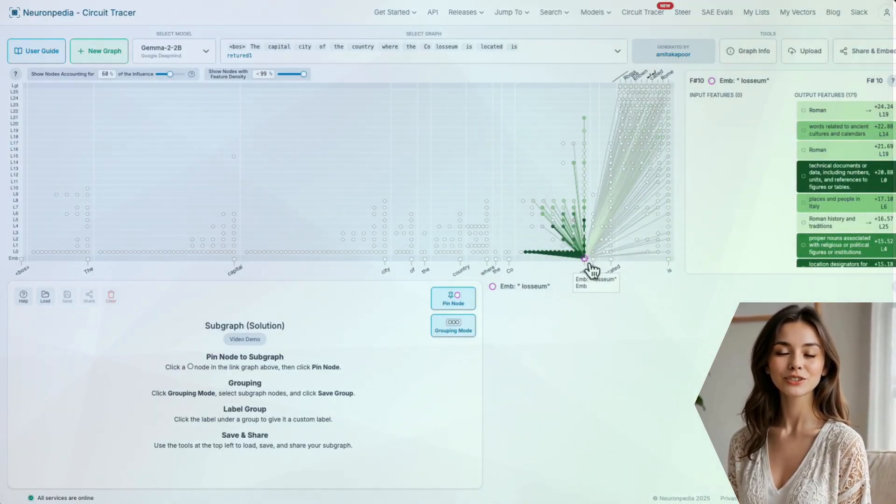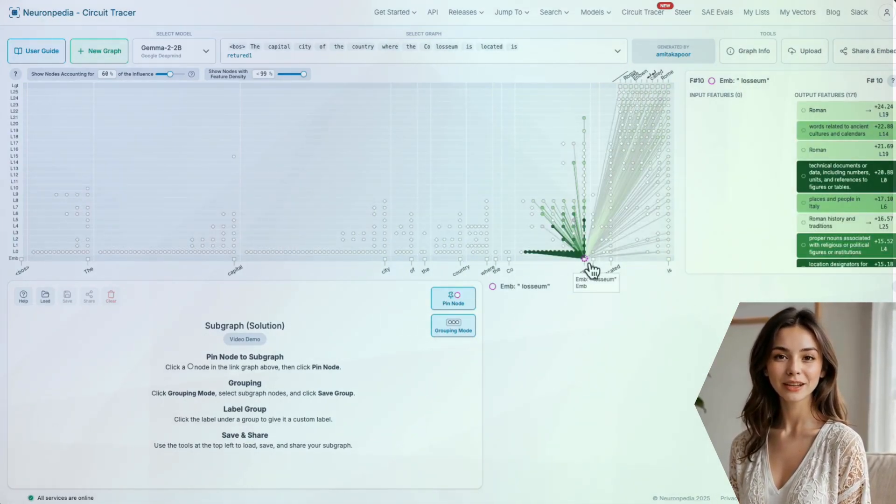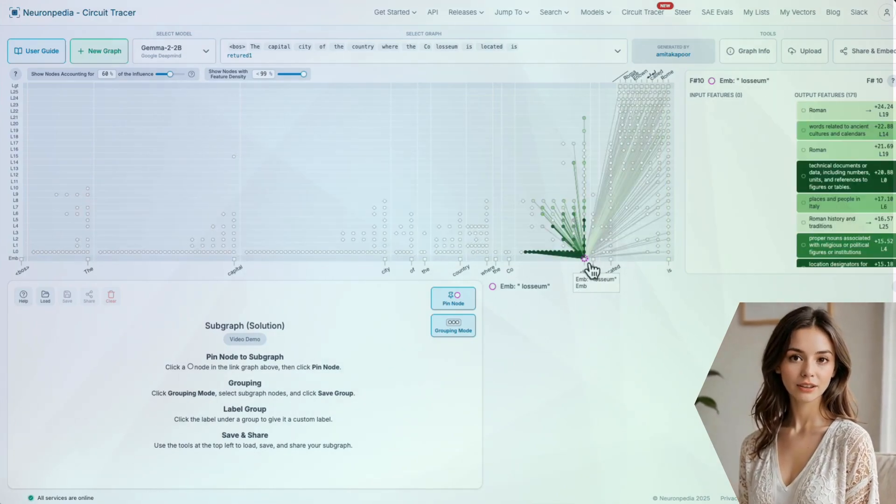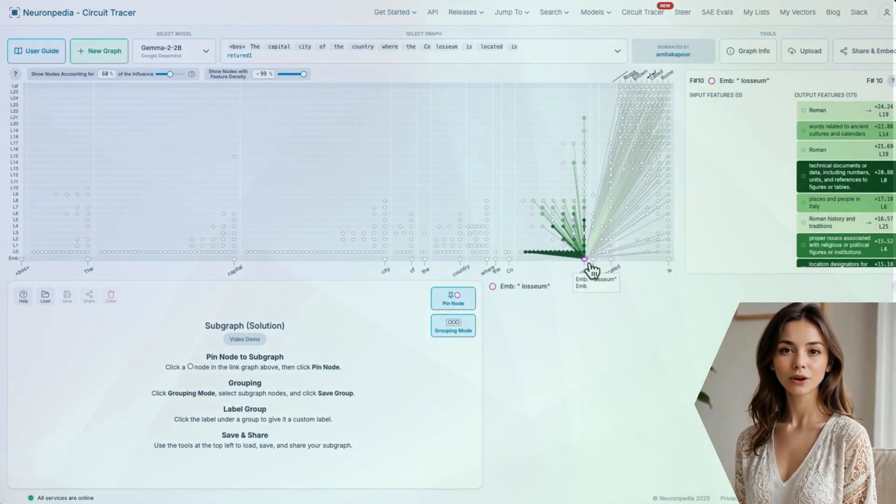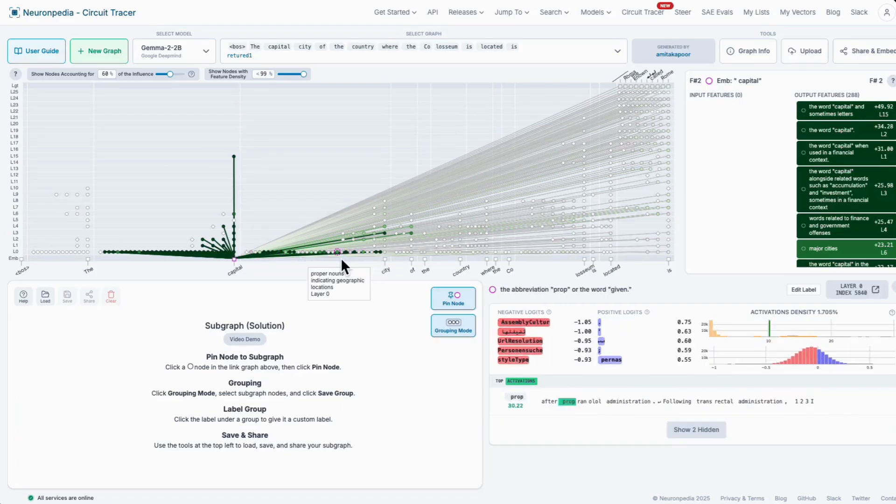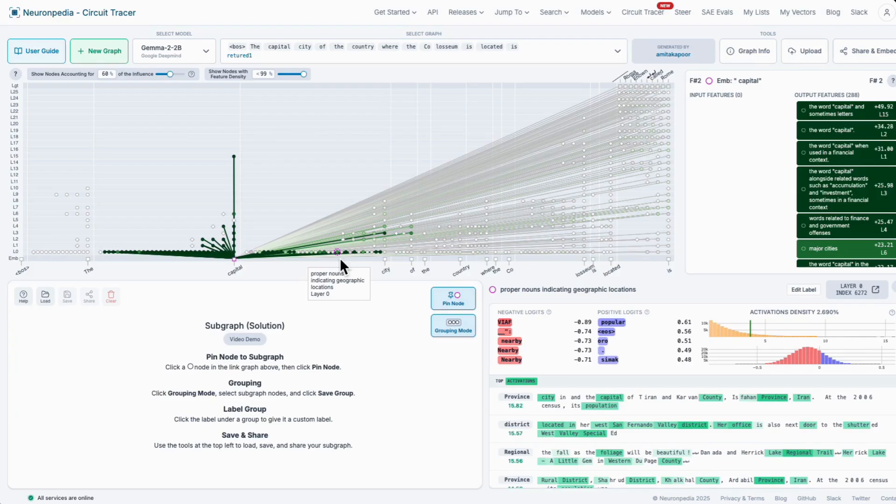First, the Circuit Tracer shows that the word Colosseum strongly activates features related to Roman history and inscriptions. You can see these connections lighting up here. The model is thinking, okay, Colosseum, that's a Roman thing. At the same time, the word capital in the prompt activates a whole different set of features, a general concept of capital cities. So now the model has two big clues active in its mind, Roman Italy and capital city.